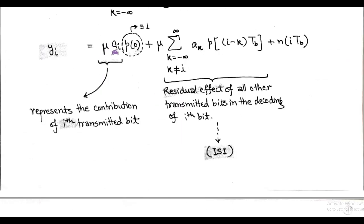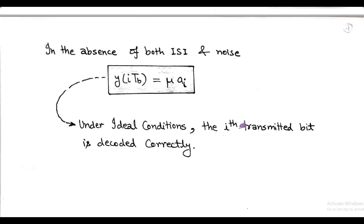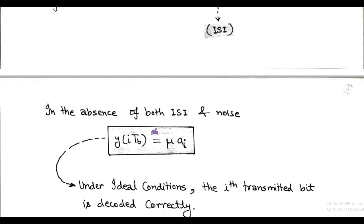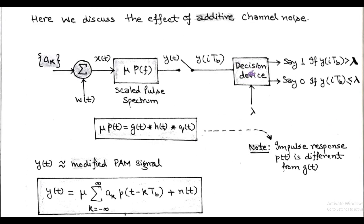This relation shows that the i-th transmitted bit is decoded correctly. So, in the absence of inter-symbol interference and channel noise, we get the transmitted bit in the form of 0 and 1. A decision making device having threshold λ makes a decision and outputs 1 if y_i > λ, and 0 if y_i ≤ λ.